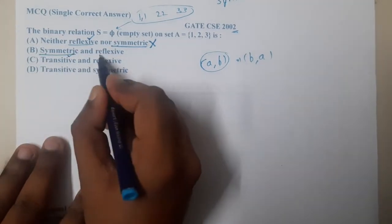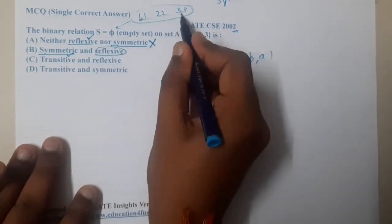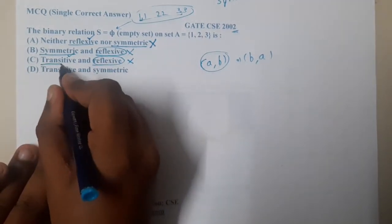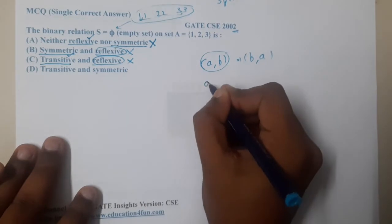So let me continue. Option B says it is symmetric, that's absolutely correct, but it says reflexive. These three things are missing, how can you say reflexive? Wrong. Similarly, this again says reflexive, it's wrong.